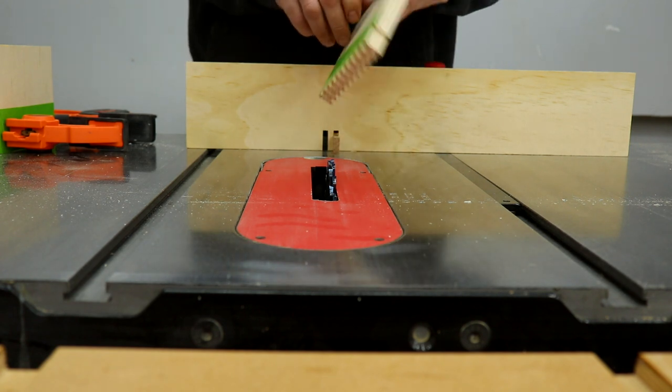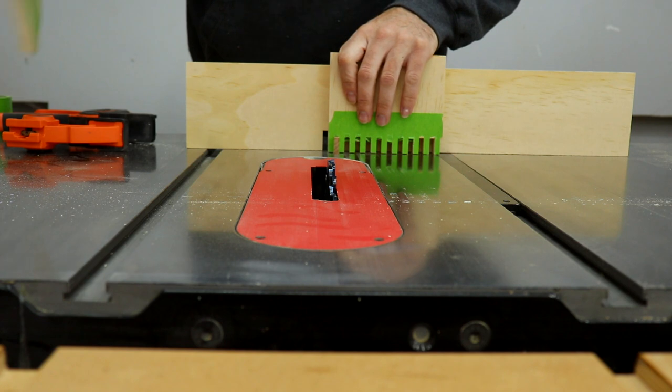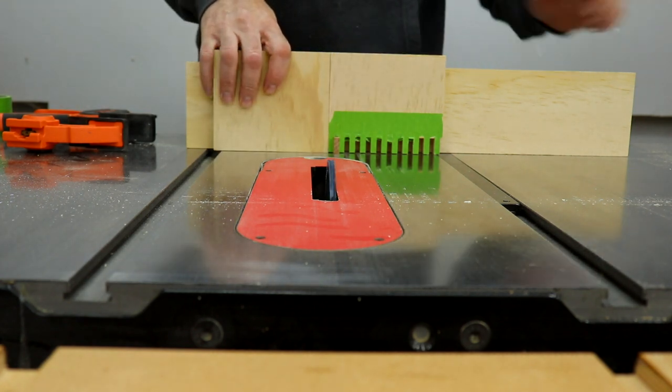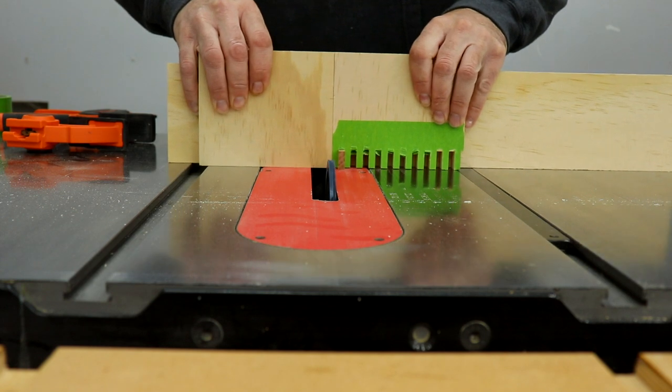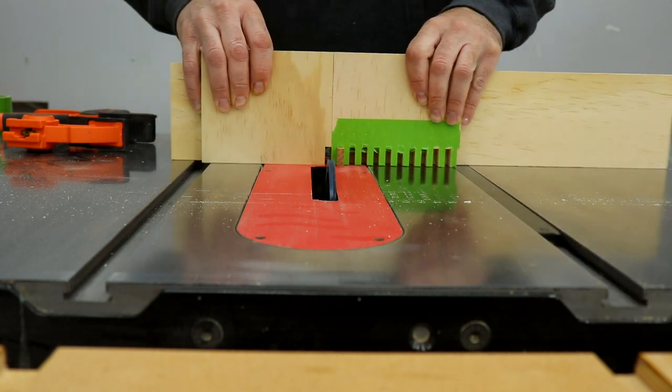Alright, the most important part of the process is this: take the first piece, flip it around and put it on the pin, and then take your second piece, butt it up against the first and then make a cut. This sets it up so the blade will cut the opposite slots of the first one and will allow them to fit together.